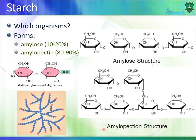Amylopectin, the predominant form of starch, is also made of glucose monomers with alpha-1,4 glycosidic bonds. Like glycogen, it has branching points formed by alpha-1,6 glycosidic bonds between carbons one and six. However, the branching pattern of amylopectin is less extensive than that of glycogen.